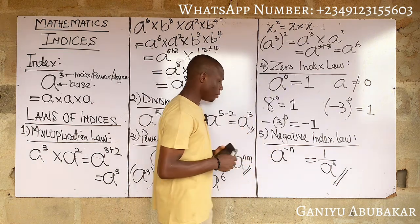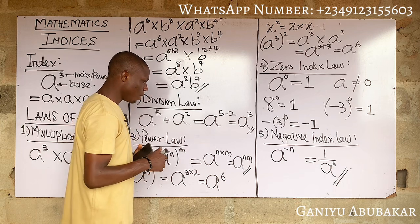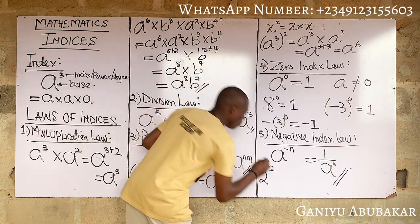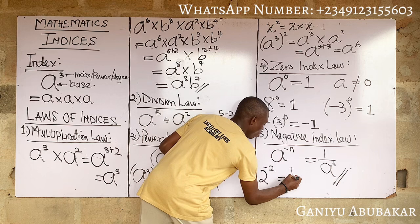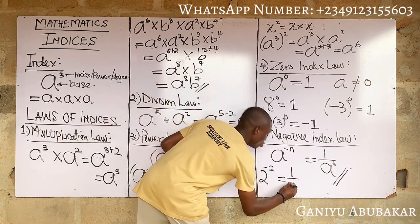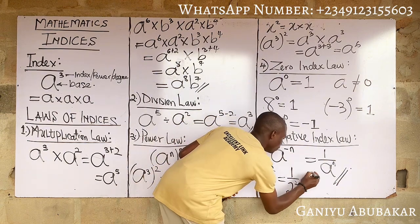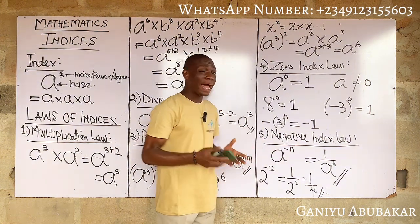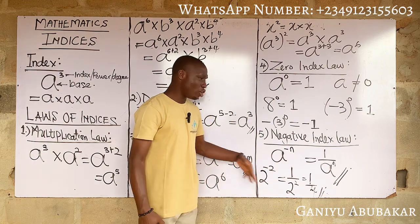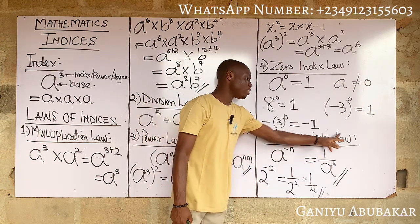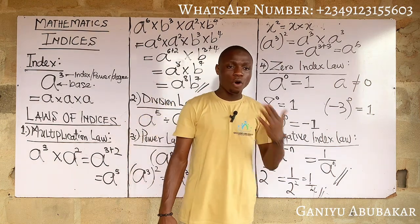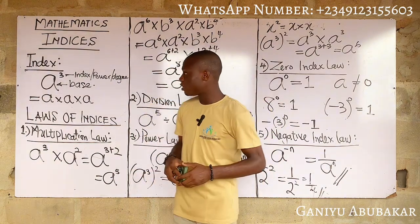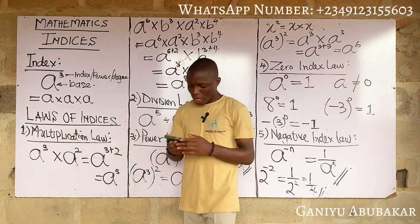For example, 2^(−2): applying the Negative Index Law, this becomes 1/2² = 1/4. That's the example that further explains the concept behind the Negative Index Law — the fifth law governing indices.